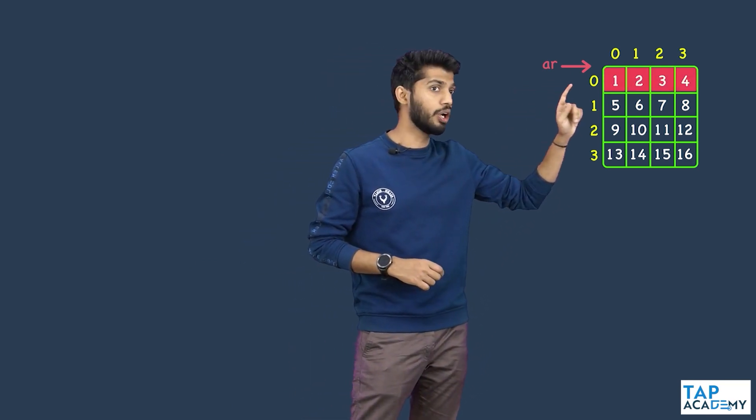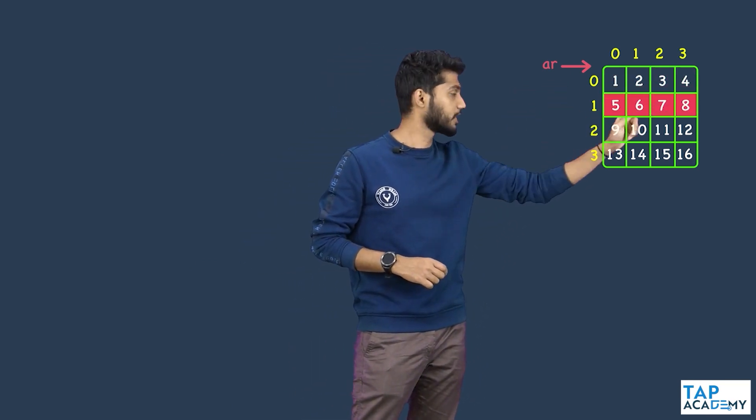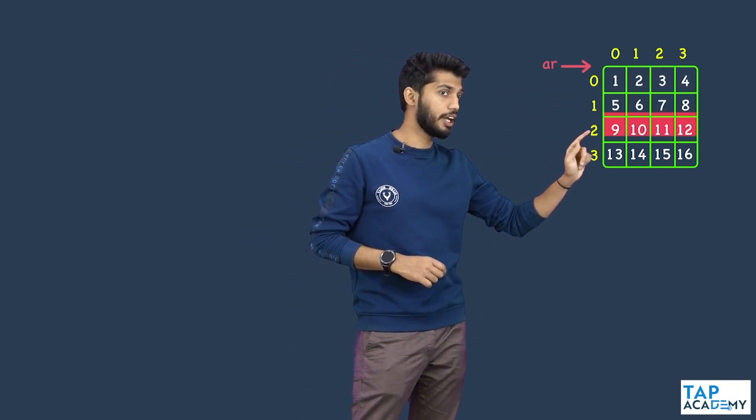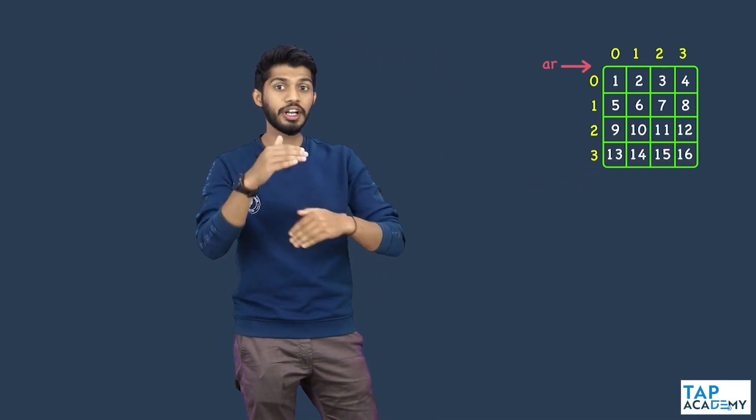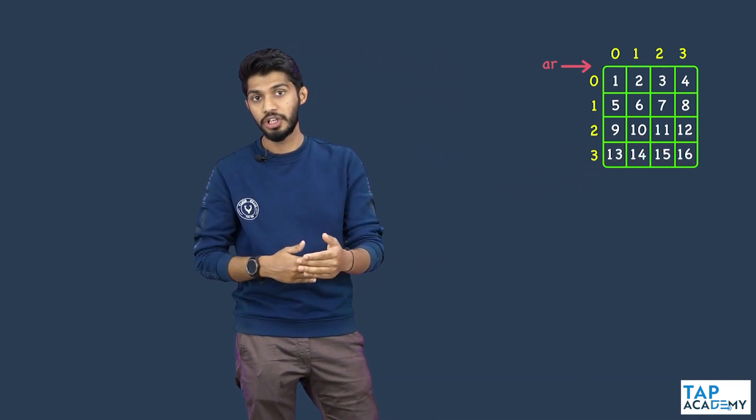What I mean to say is, I will first try to print 1, 2, 3, 4, 5, 6, 7, 8, then 9, 10, 11, 12, 13, 14, 15, 16 — in the normal sequential order. This is how I will try to print it first.